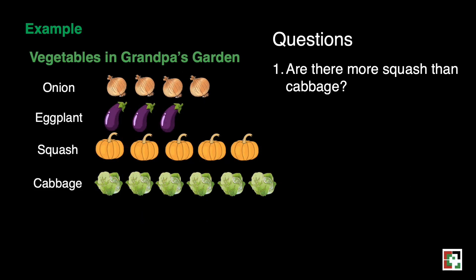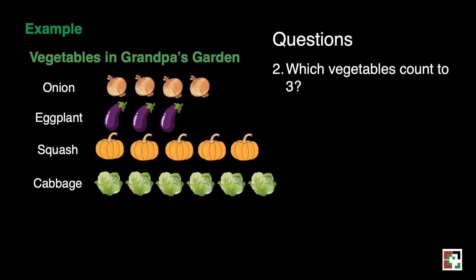For question one, are there more squash than cabbages? Based on our table, there are five squash and six cabbages, so there are more cabbages than squash. Our answer is no. For question two, which vegetable count is three? Based on our table, there are three eggplants, so the answer is eggplants.